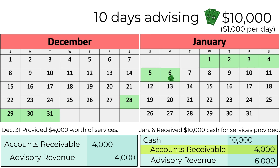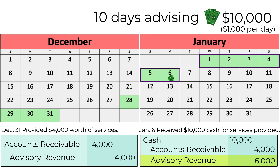We credited accounts receivable for $4,000 because the customer has now paid us for the work we did in December. We credited advisory revenue for $6,000 because we worked six days of the contract in January and need to record that revenue. Thank you.